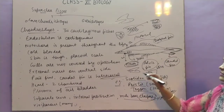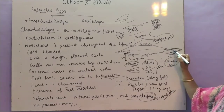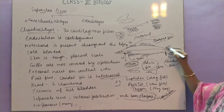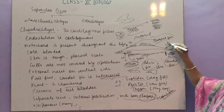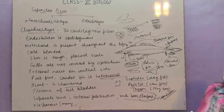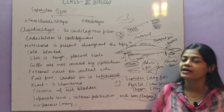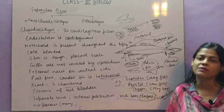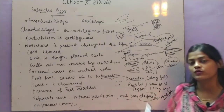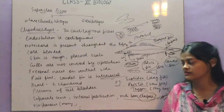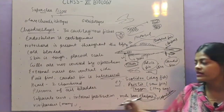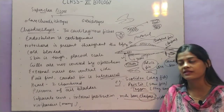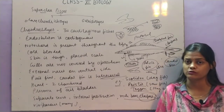The claspers are structures present near the tail region of the male fish which help to release male gametes into the female body, enabling internal fertilization. Generally they are oviparous, but there are many examples in this group which are viviparous also.